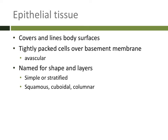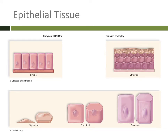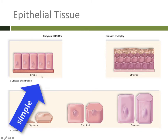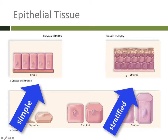Let's take a closer look. You could have one layer of cells — you can see here one layer of epithelial cells, very tightly packed together, sitting on top of the basement membrane. Or you can have multiple layers of cells, still sitting on top of the basement membrane. When you have one layer, it's called simple, and when you have more than one layer, it's called stratified. We use these words — simple or stratified — to denote how many layers the epithelial tissue has.